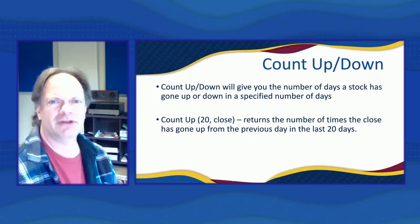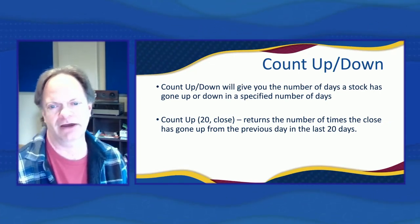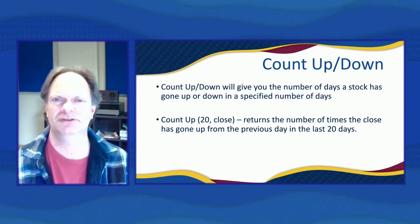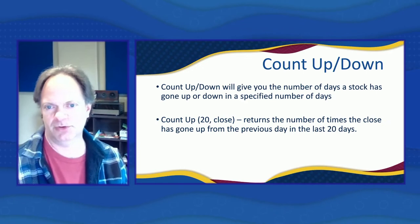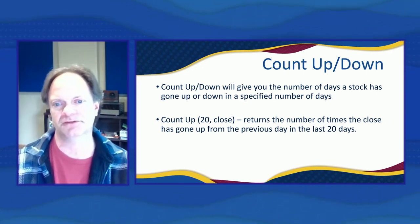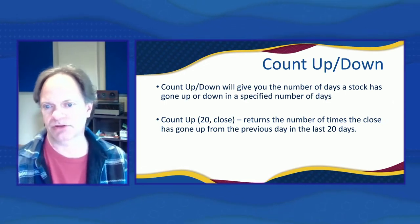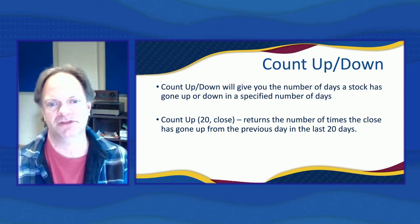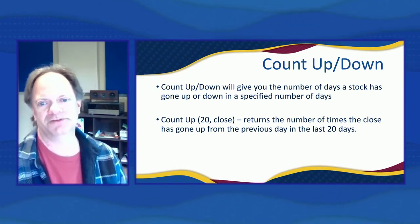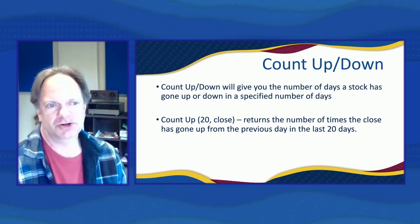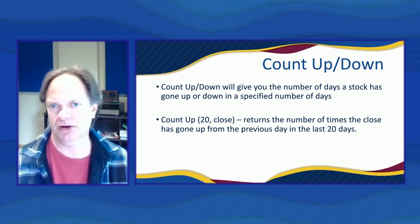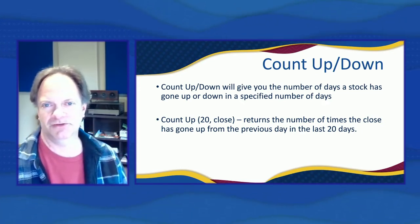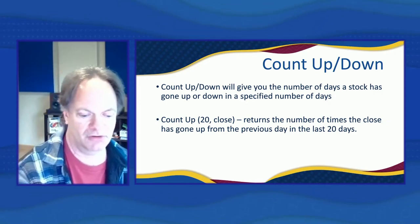Count up and count down is very similar to streak up and streak down, but you can see it says count up 20 close. We give it a number of time periods to look across — days, weeks, or months — and it returns the number of days the value has gone up during that period. So we can say over the last 20 days show me everything that's gone up 6, 9, or 12 days. That gives us a little more leeway than streak up and streak down.